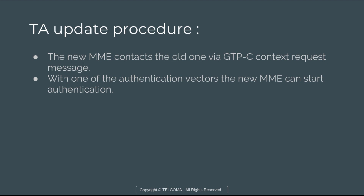In the tracking area update procedure, the UE sends a Tracking Area Update Request message containing its current GUTI or IMSI, the old Tracking Area Identifier, and EPS bearer status information to the eNodeB, which then forwards it to the MME. If the old MME cannot be selected, a new MME is chosen by the eNodeB. The new MME first retrieves the IMSI of the subscriber and authenticates by contacting the old MME via a GTPc Context Request message. The Context Response message contains authentication vectors and information about the user's active bearers.